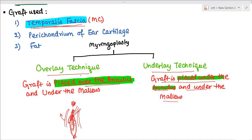In contrast, in underlay technique we are lifting the epithelium, the fibrous layer, and the mucosal layer. We put the graft there and then support it with the handle of malleus. That's all about myringoplasty.